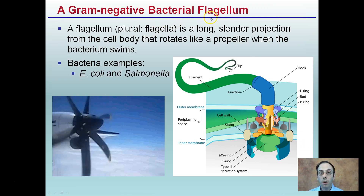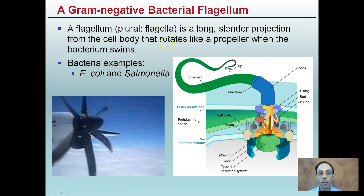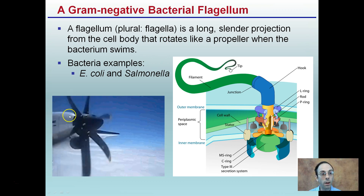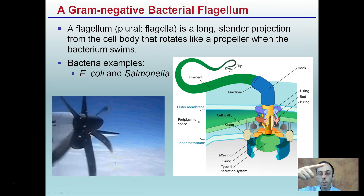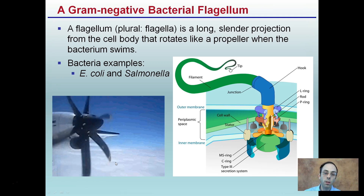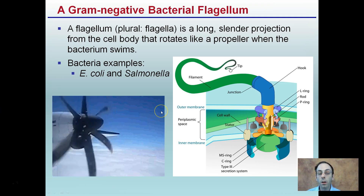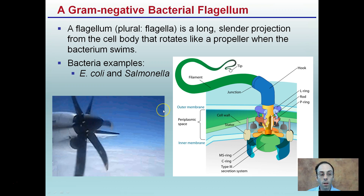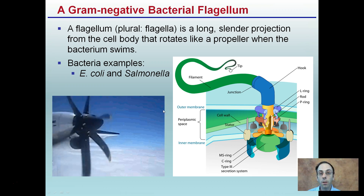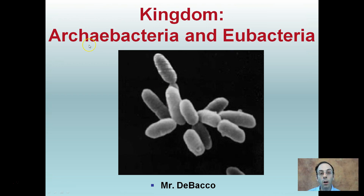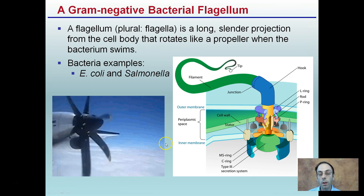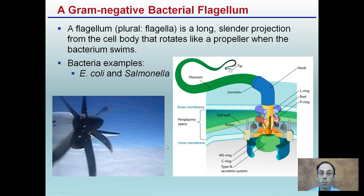Gram-negative bacteria have a flagellum, or pleural flagella — a long, slender projection from the cell body that rotates like a propeller, allowing the bacteria to swim. E. coli and Salmonella are two examples of this. Hopefully this clarifies the difference between Eubacteria and Archebacteria and helps identify certain characteristics with each.